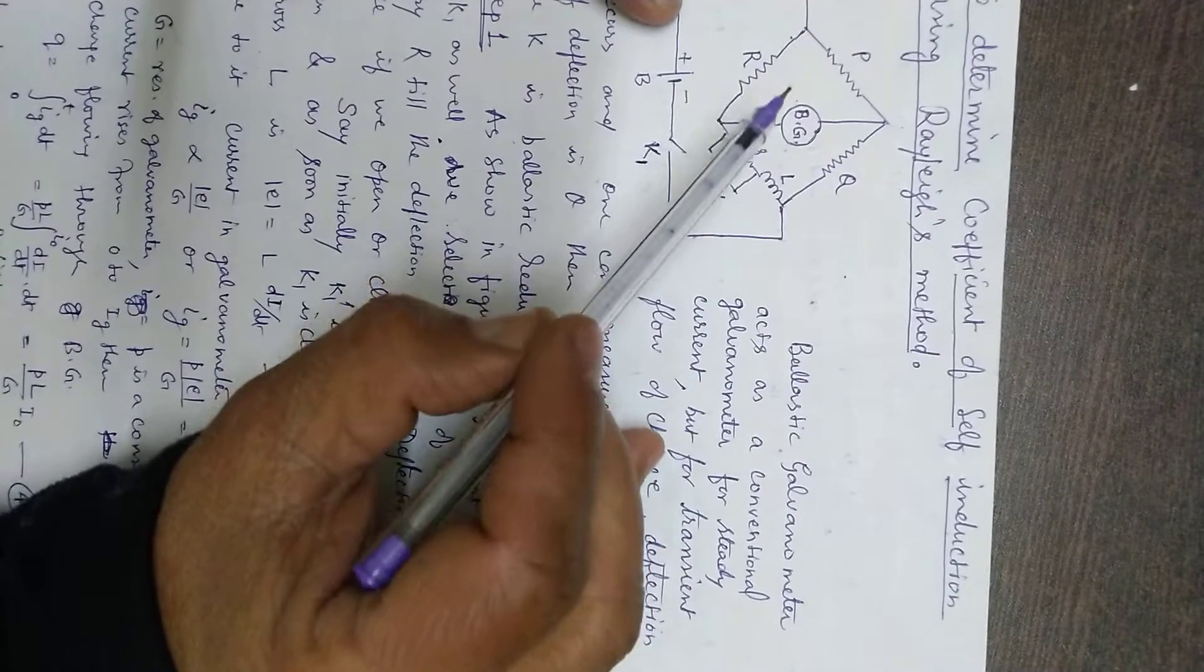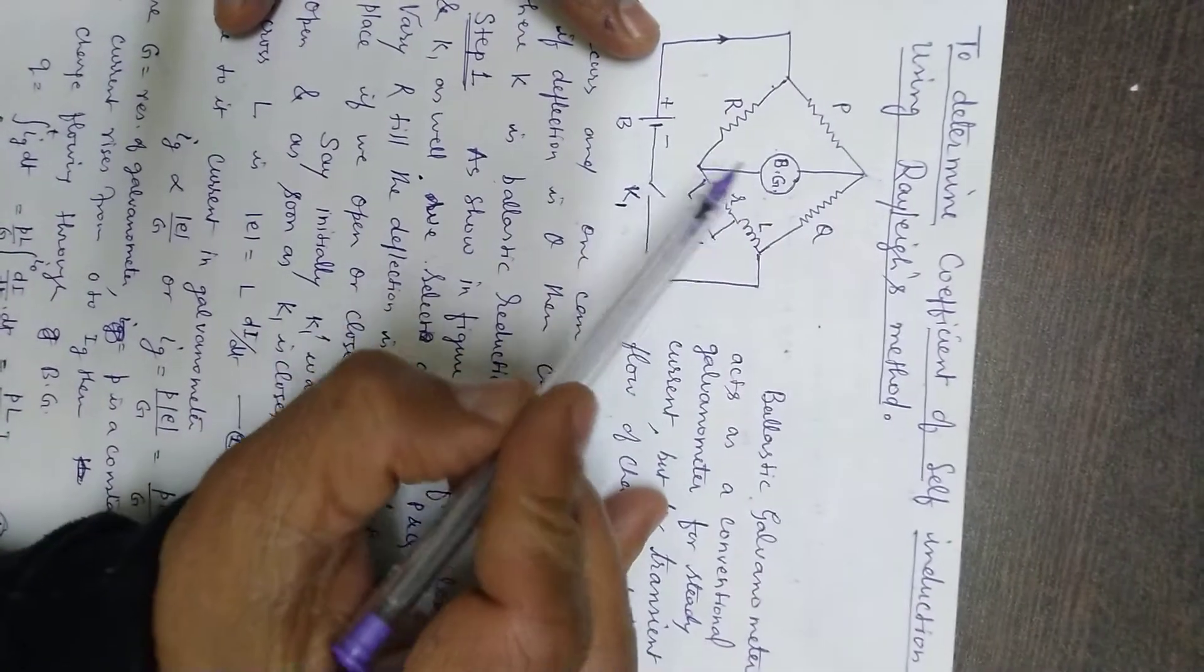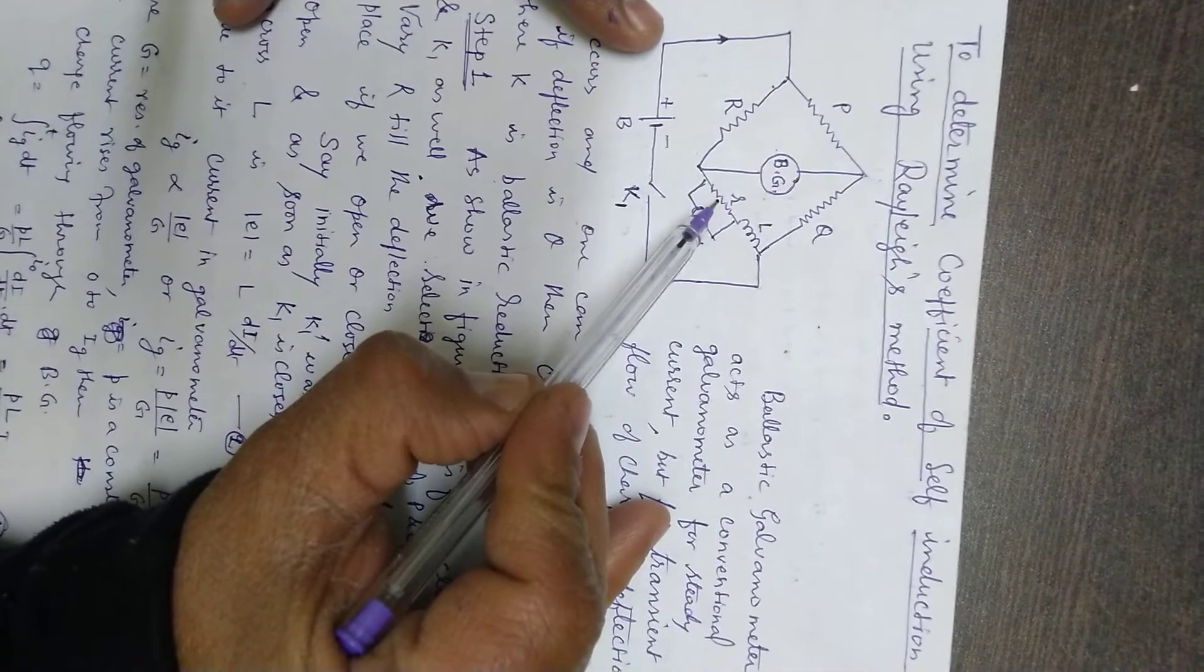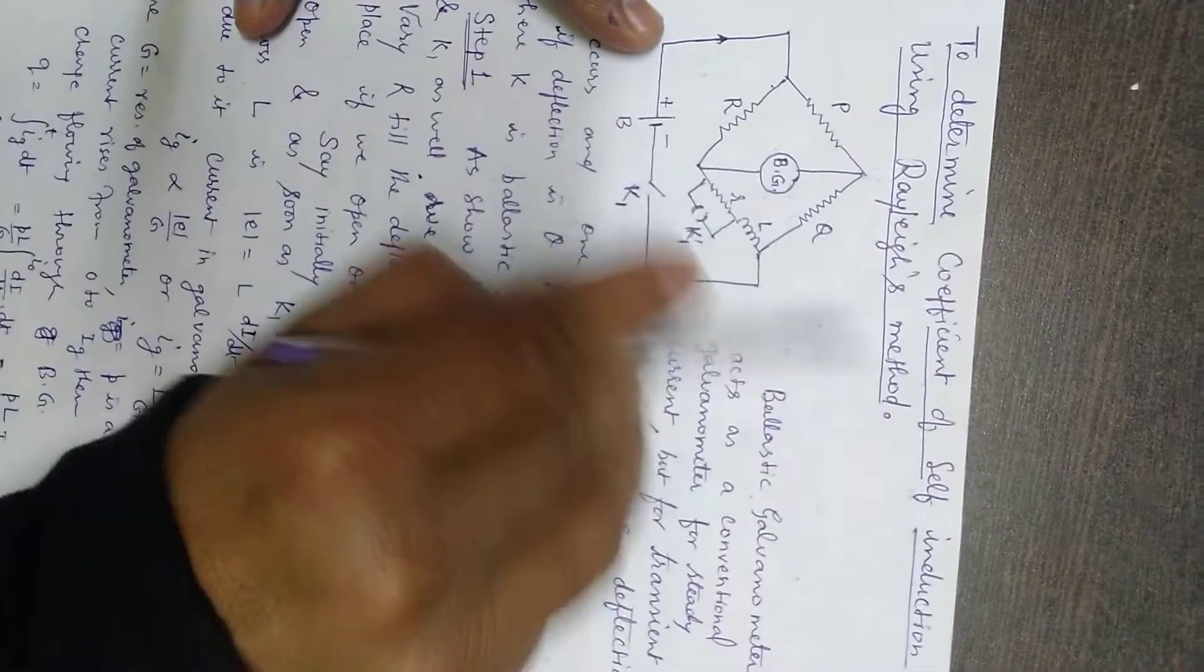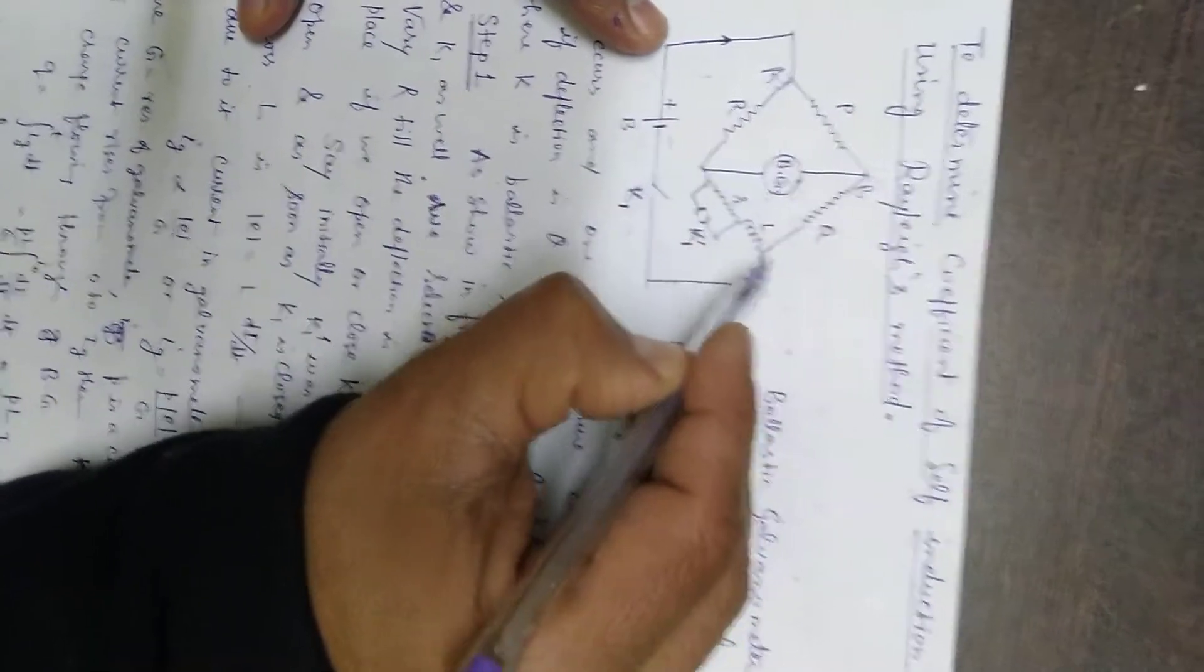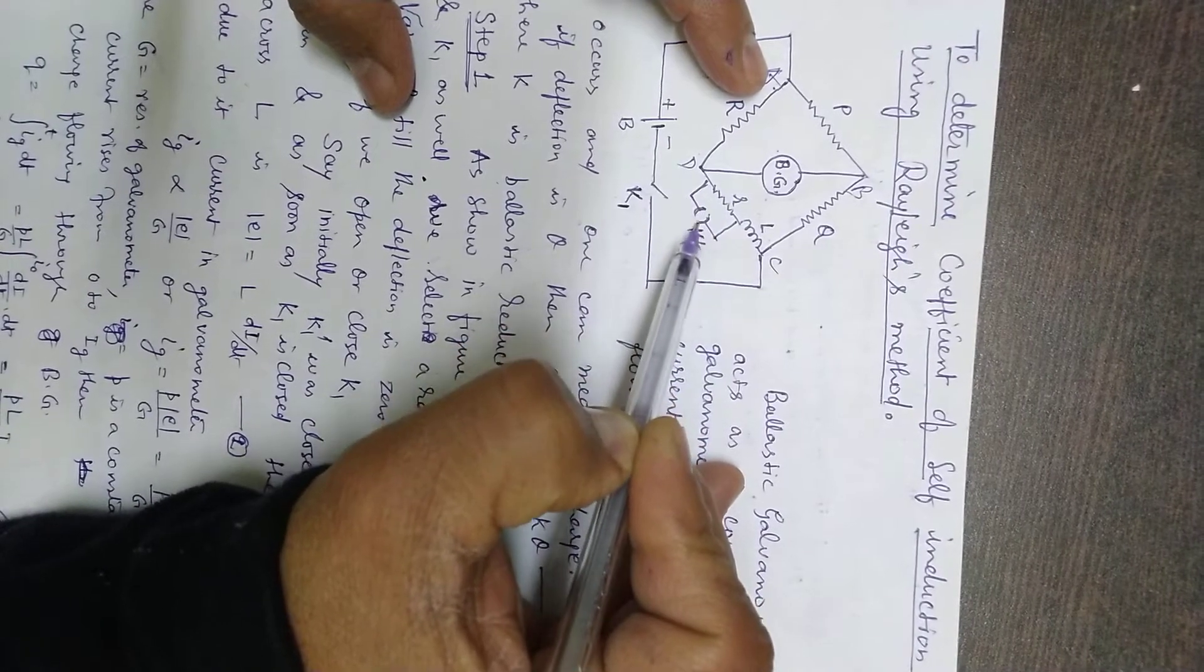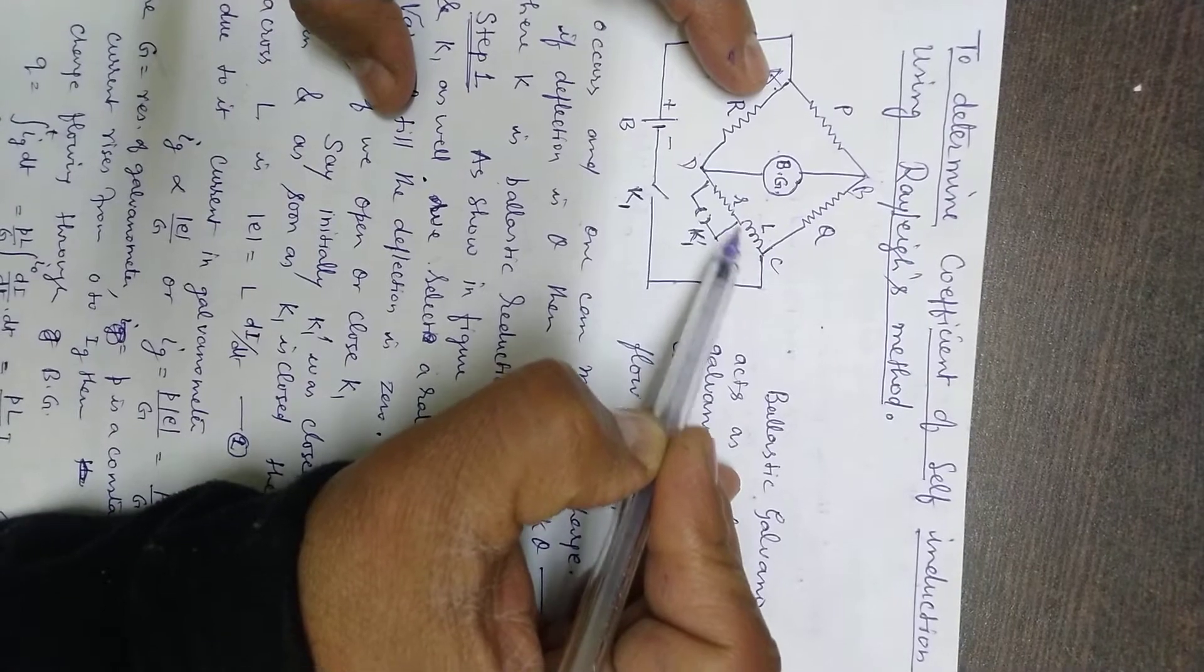In this method you can see it is a Wheatstone bridge-like structure. This arm has resistance P, this arm has resistance Q, this arm has resistance R. But the arm which often has resistance S is replaced with a combination of a very small resistance, small r, remember this is a very small resistance, and there is an inductance whose coefficient of self induction L I wish to determine. As usual you can mark ABCD.